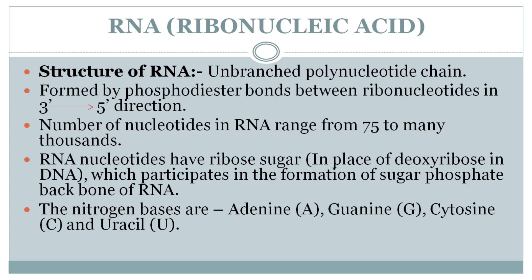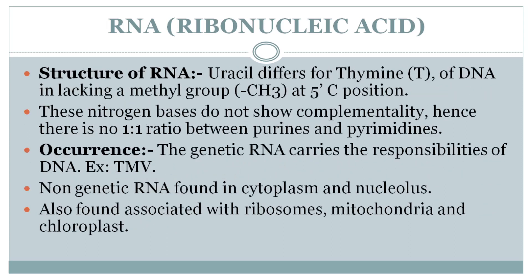The nitrogen bases in RNA include adenine, guanine, cytosine, and uracil. It is very important to note that in case of DNA, adenine, guanine, cytosine, and thymine are present. But in case of RNA, in the place of thymine, uracil is present.